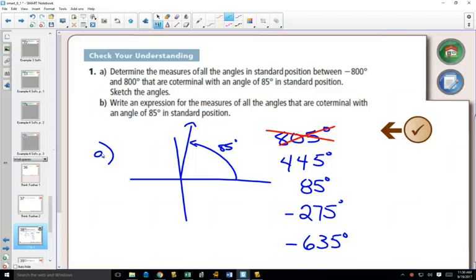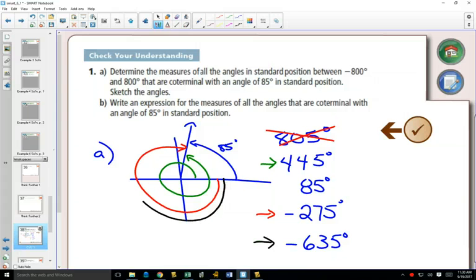And so, if we would draw these: 85° as the original one here, 445° would be once around and end like that. So, -275° would start at the positive x-axis and go there. And -635° would start, go all the way around once, and then end there. But all of them end at the same spot.